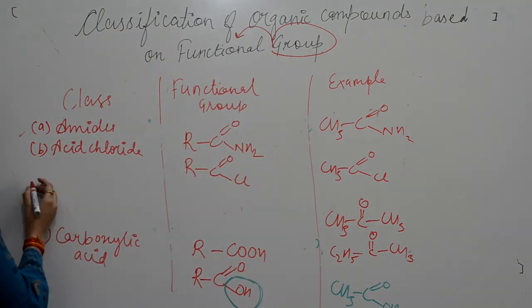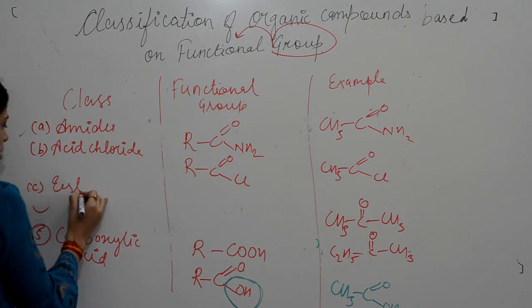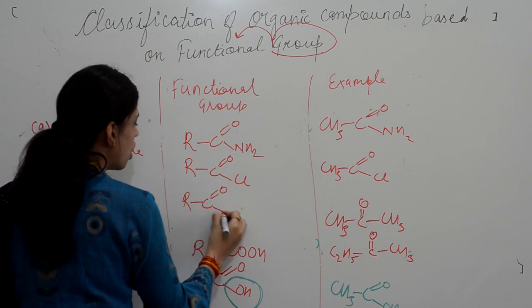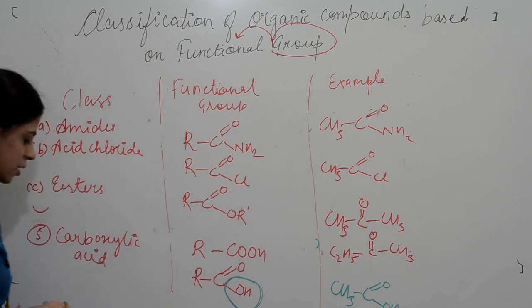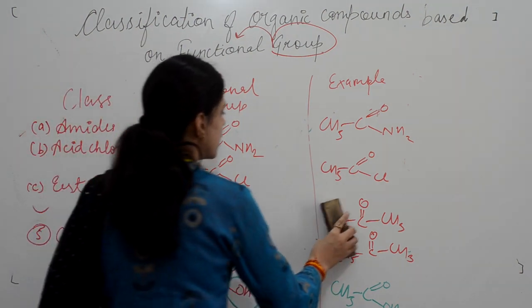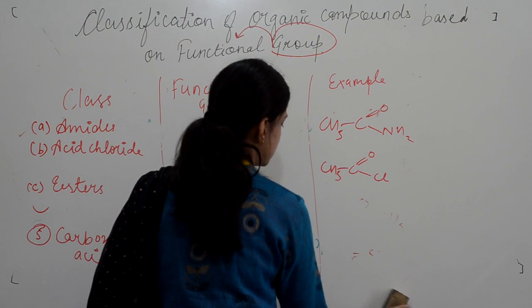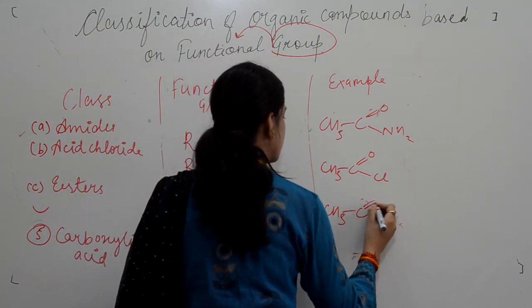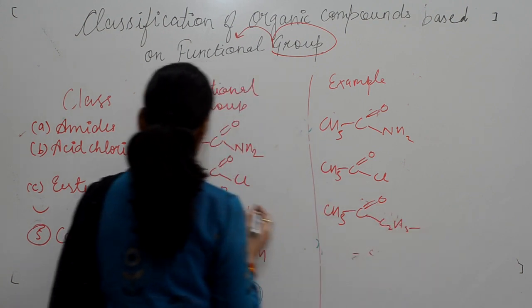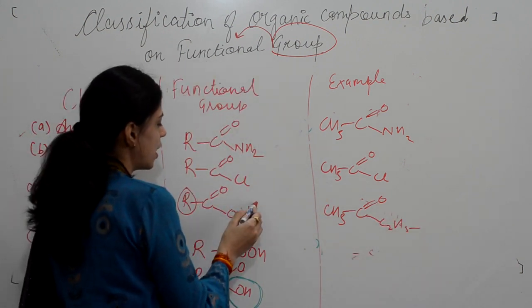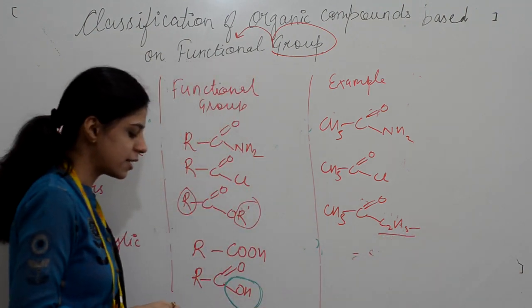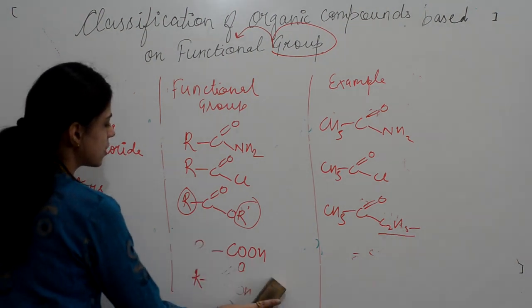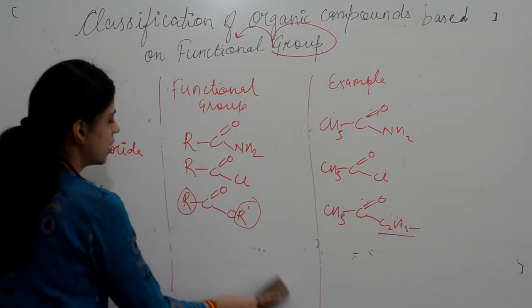The next derivative is esters. In esters, the OH group is replaced by OR'. The example is CH3-C(=O)-OC2H5, where I have taken CH3 on one side and C2H5 on the other. The name is ethyl acetate. Don't get confused in naming — it will be clear when we discuss nomenclature.